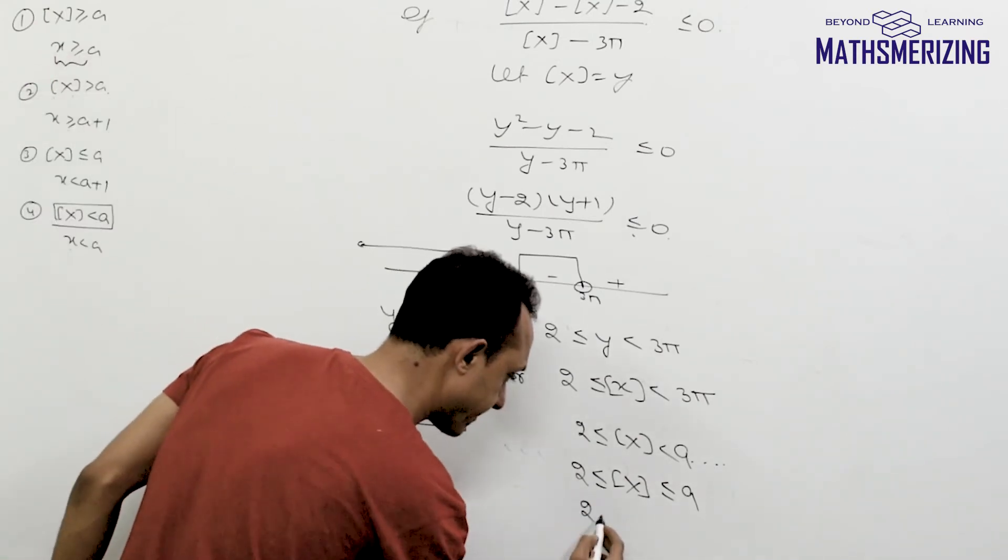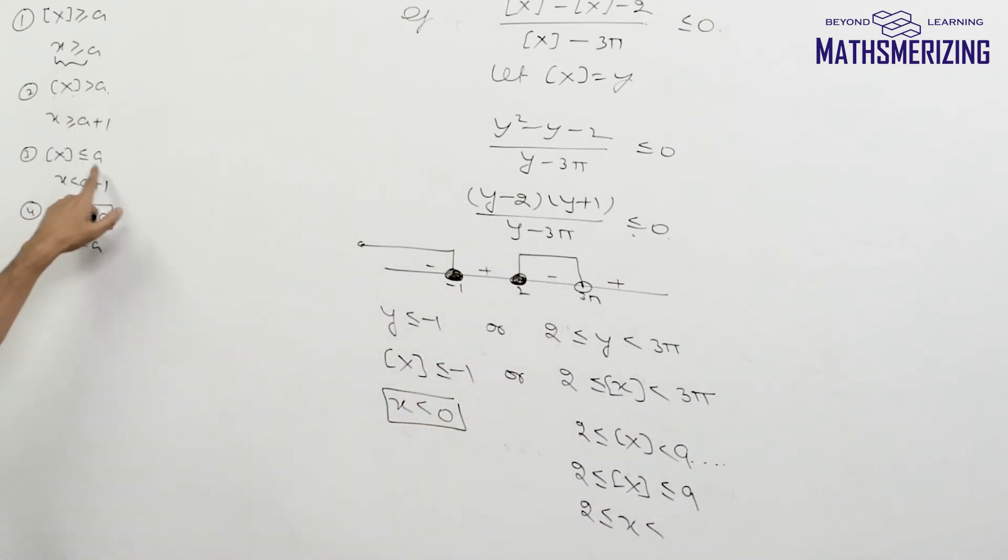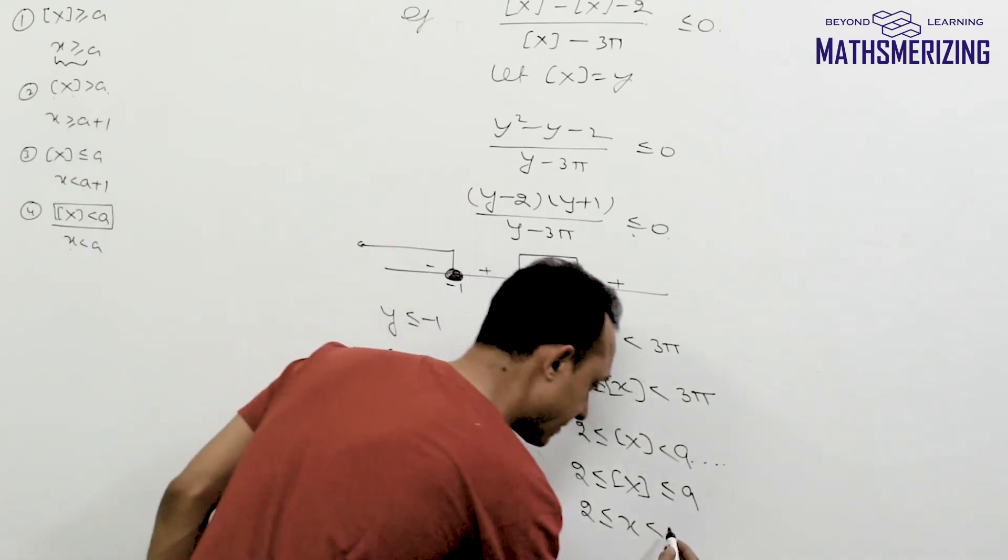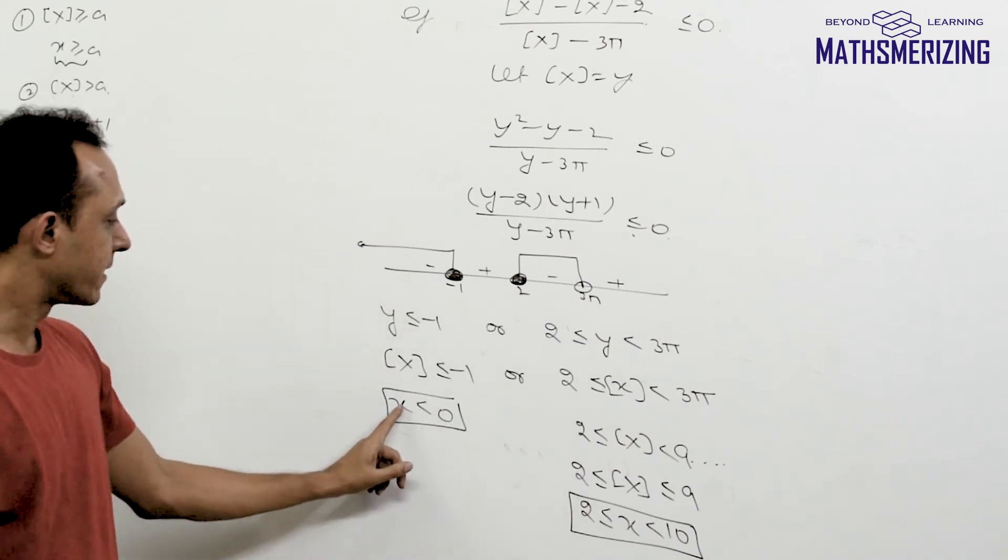So I'll write x is greater than or equal to 2. And when greatest integer function of x is less than or equal to a, it is x is less than a plus 1. So this is less than 10.